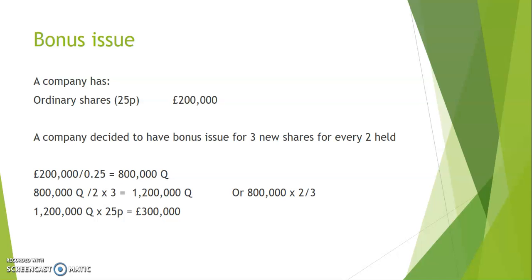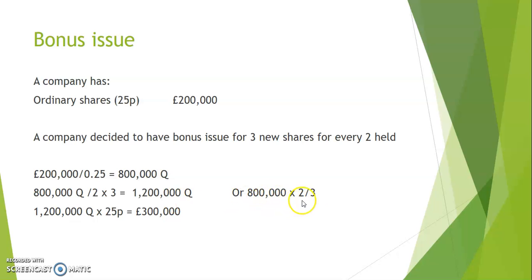Another example: a company has £200,000 worth of shares at 25p per share nominal value, and they are going to do three new shares for every two held. Step one: work out how many shares are in issue — £200,000 divided by 25p gives 800,000 shares in issue. Students sometimes do this the wrong way around, dividing by three and multiplying by two instead of the correct method.